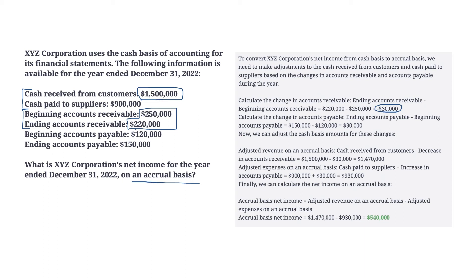Looking at accounts payable, we started with $120,000 and it increased by $30,000. That means we had a debit to expenses for $30,000 and a credit to accounts payable for $30,000. So even though cash paid was $900,000, we need to increase our expenses by this $30,000, making expenses $930,000. Revenue is $1.5 million minus the $30,000 adjustment, which is $1,470,000. Expenses are $900,000 plus $30,000, which is $930,000. So accrual basis net income is $1,470,000 minus $930,000, which is $540,000.